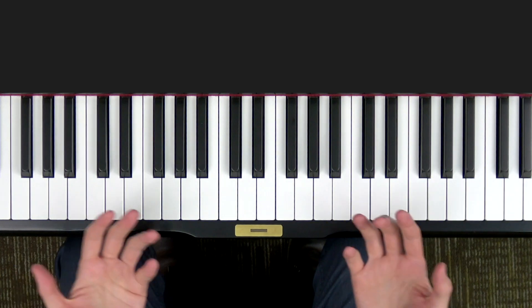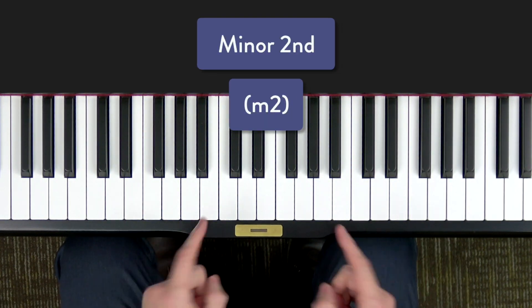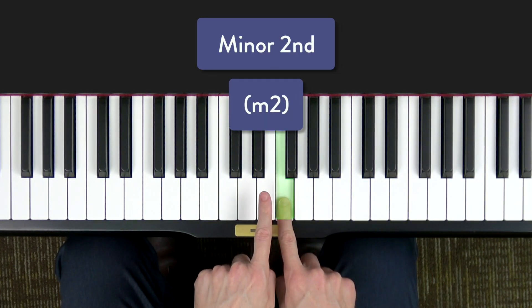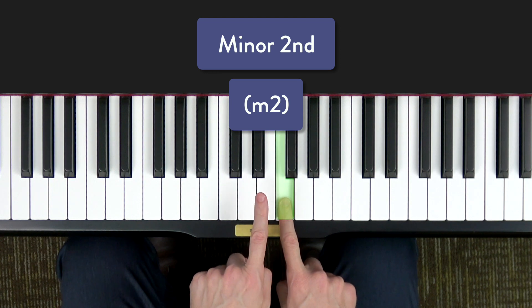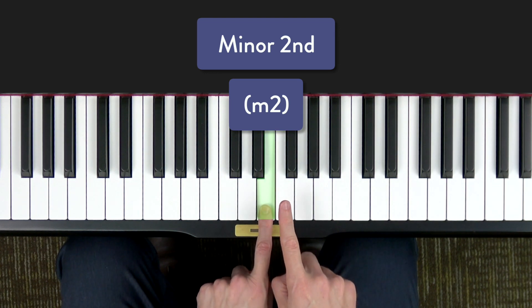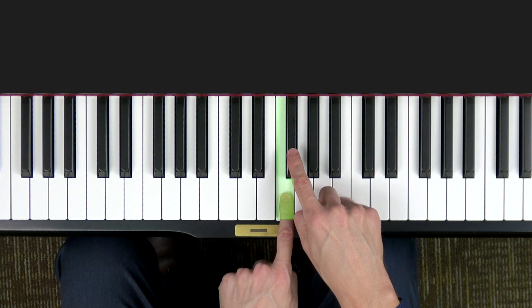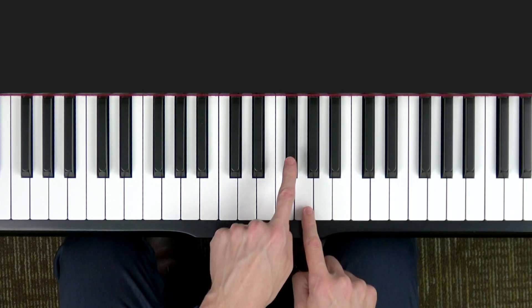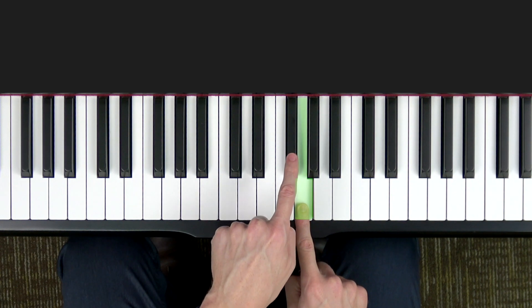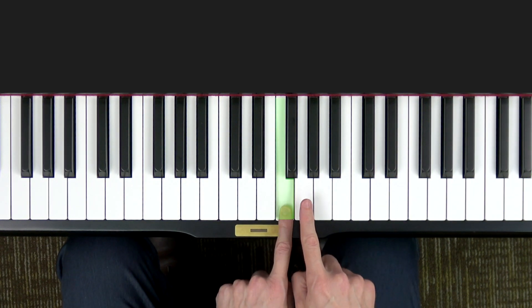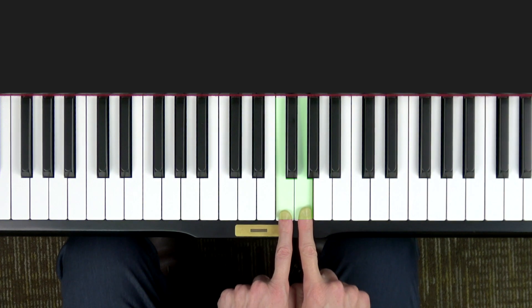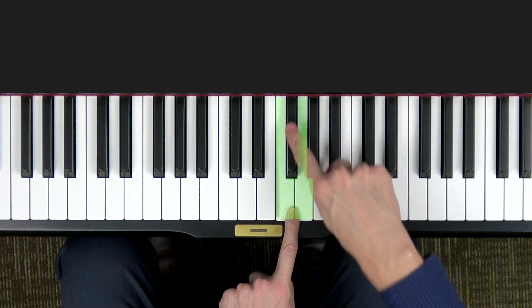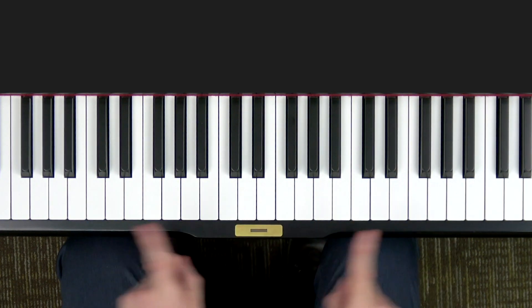What is a minor second? A minor second is the same as a half step, which means two keys so close together there is no key in between. This is a minor second between E and F. Also between F and F-sharp is a minor second. F-sharp to G is another minor second. However, F to G is not a minor second because there's a key in between. Anytime there's a key in between, not a minor second.